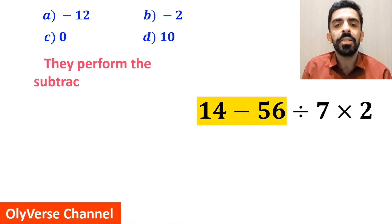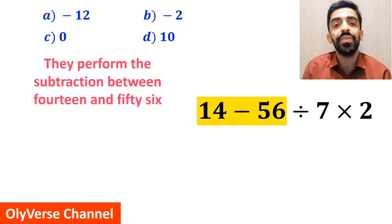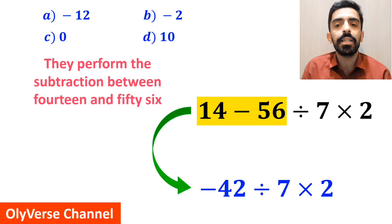In the next step, they perform the subtraction between 14 and 56, and simplify this expression to negative 42, divided by 7, multiplied by 2.